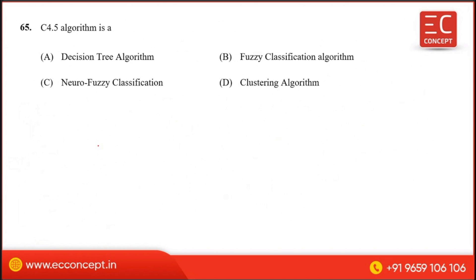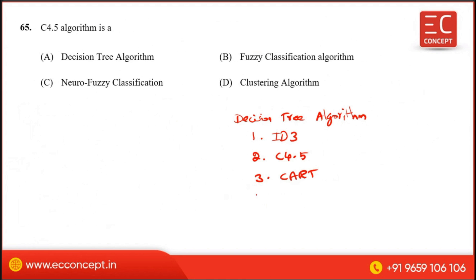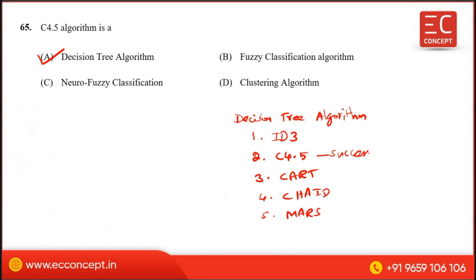The C4.5 algorithm is a decision tree algorithm. Decision tree algorithms include ID3, C4.5, CA18 (CART), CHAID, and the MARS algorithm. C4.5 is a decision tree algorithm category and is the successor of ID3. The A* algorithm is a graph search algorithm, while C4.5 and related algorithms belong to the decision tree family.